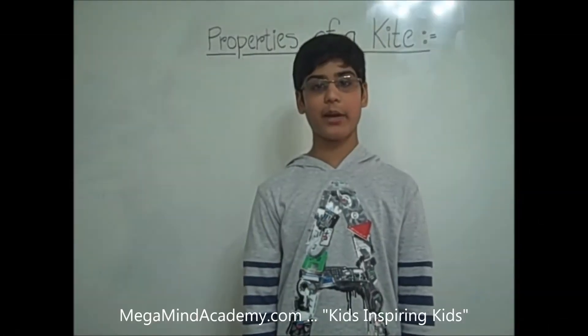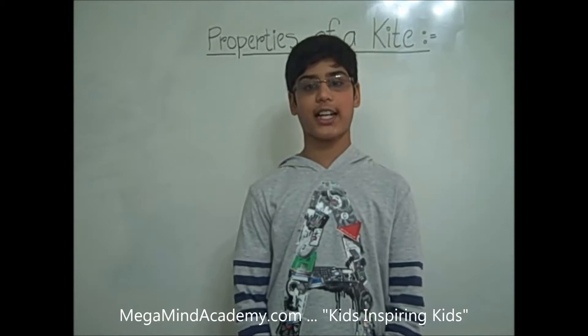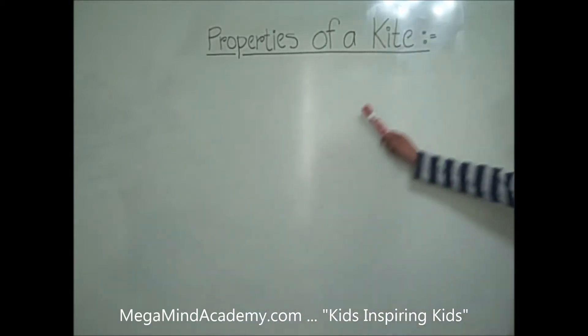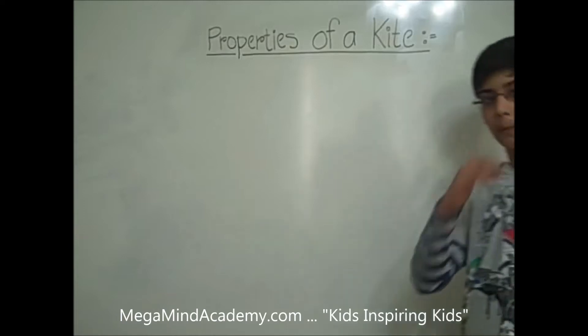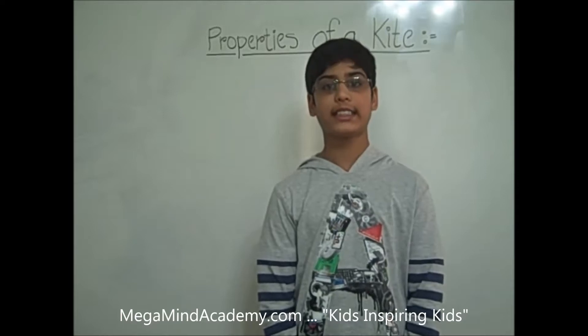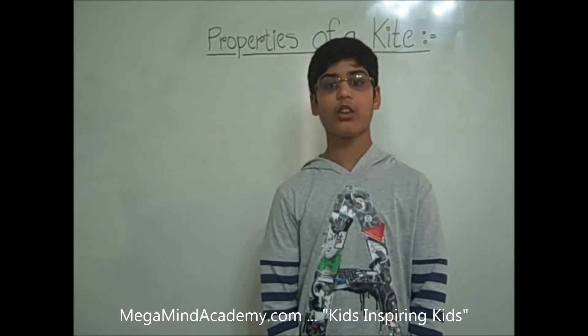Hi! Today we are going to learn about properties of a kite. A kite is a quadrilateral with two pairs of distinct equal adjacent sides.